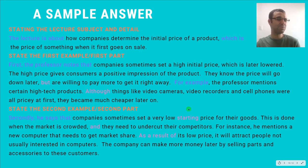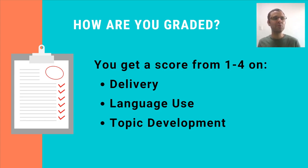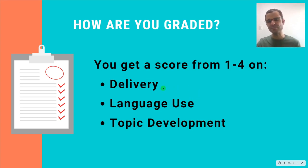That's pretty much how you answer the last of the TOEFL speaking questions. If you have any questions about that sample answer or the template, let me know. Before I finish the video, I'm going to talk very quickly about how your score is determined. Basically, you get a score between one and four in three different areas: delivery, language use, and topic development.